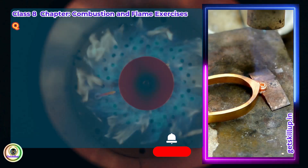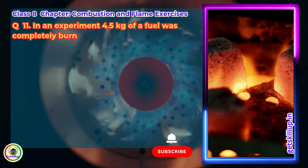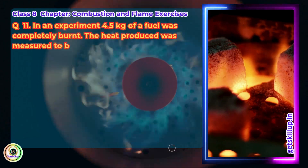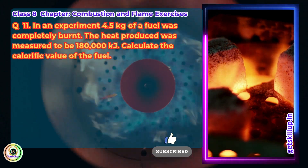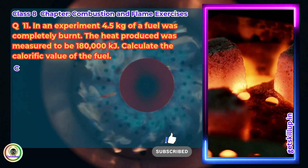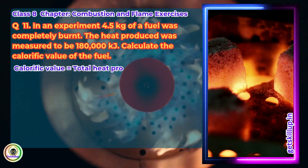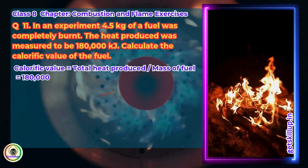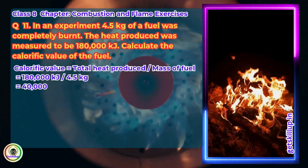Question 11: In an experiment, 4.5 kg of a fuel was completely burned. The heat produced was measured to be 180,000 kilojoules. Calculate the calorific value of the fuel. Answer: Calorific value equals total heat produced divided by mass of fuel: 180,000 kJ ÷ 4.5 kg = 40,000 kJ/kg.